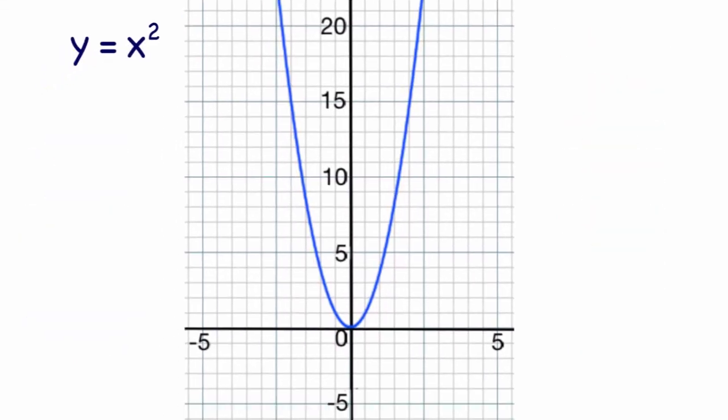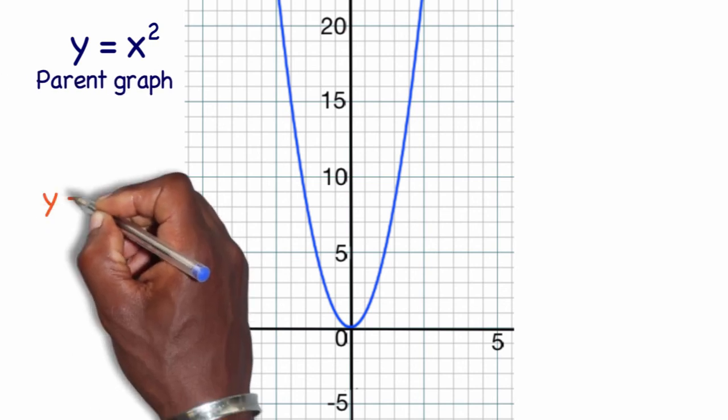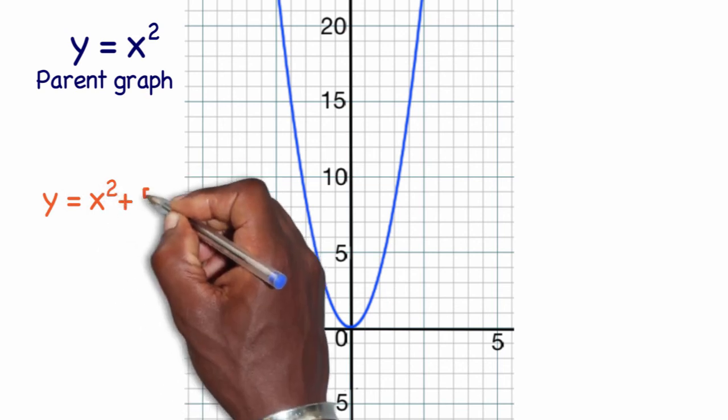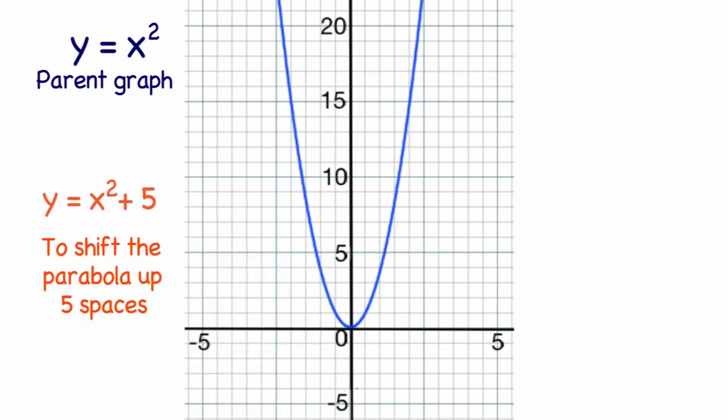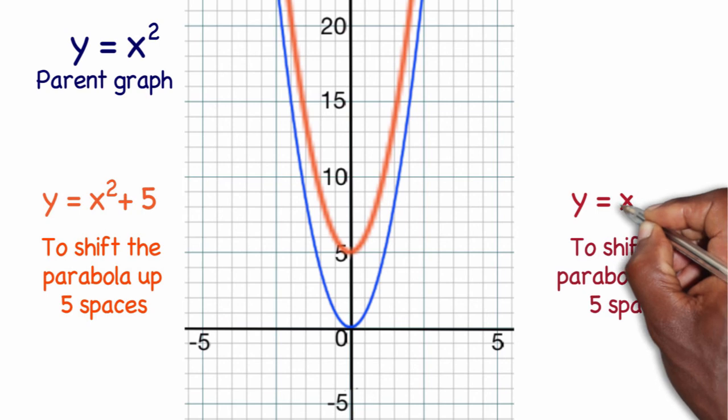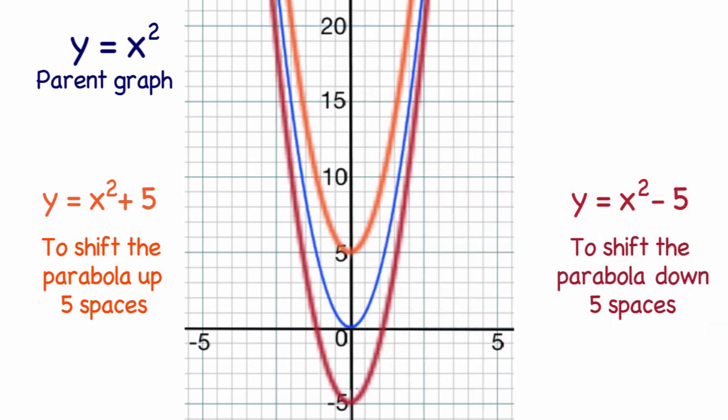So it looks like in order to shift the graph in the vertical direction, all I have to do for the parent graph is add on something to the x squared. If I add on 5, that shifts the graph up five spots, because y equals x squared plus 5. If I want to shift the graph down five spots, that would be x squared minus 5. And that concludes graphing the parent graph and making vertical shifts.